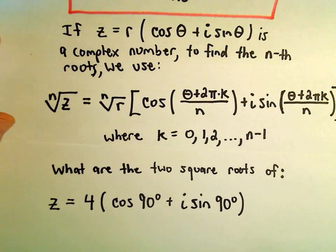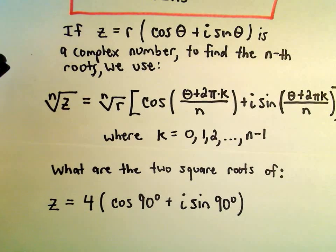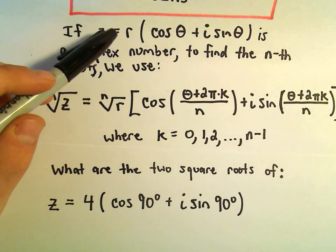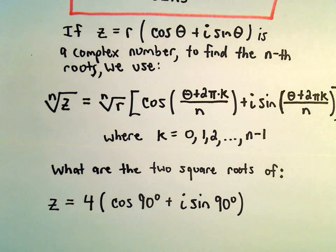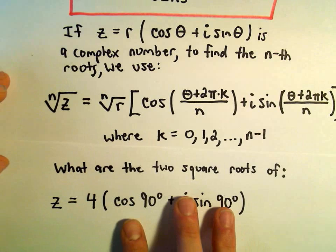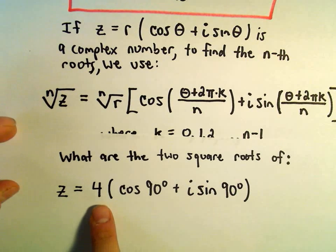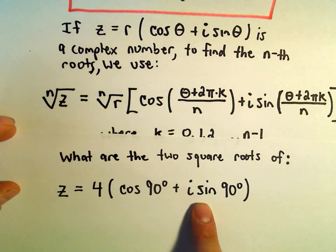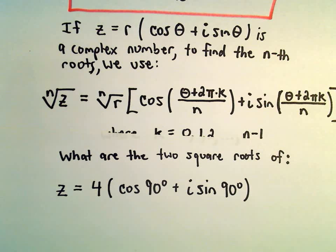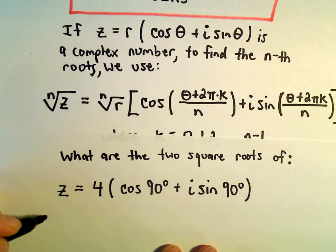One thing you'll always have to do: if you're given a complex number that's not already in polar form, you're going to have to put it in polar form. So in our example here, we want to find the two square roots of 4 times cosine of 90 degrees plus i sine of 90 degrees, and we'll use our formula.